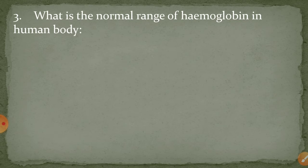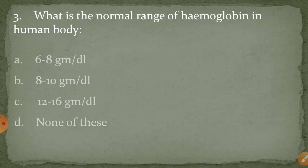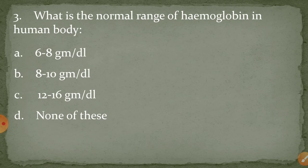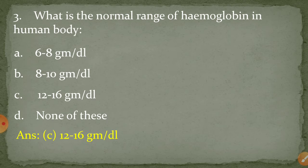Question number three: what is the normal range of hemoglobin in the human body? The correct answer is 12 to 16 grams per day.